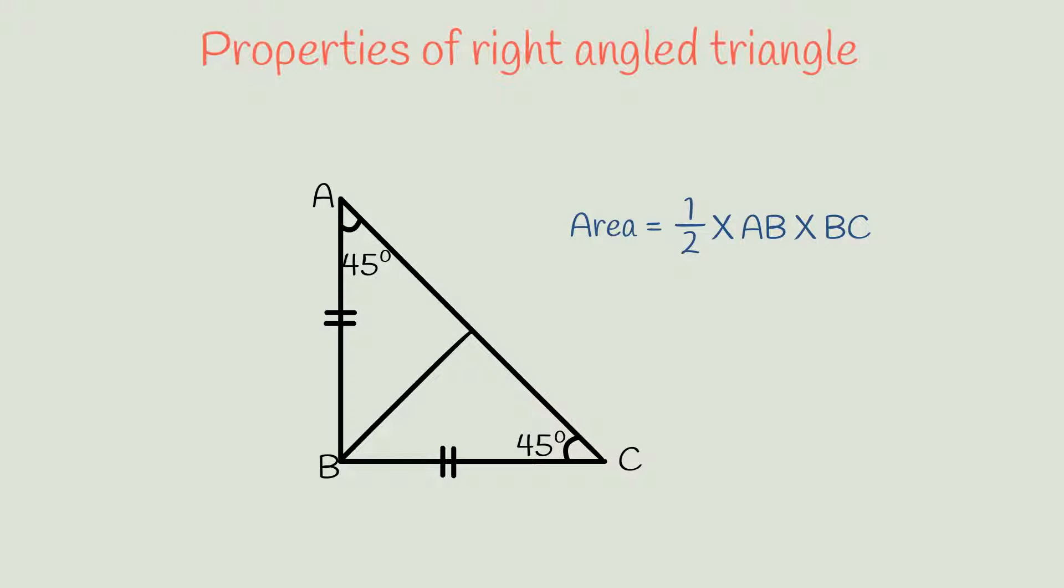The perpendicular drawn from the right angled vertex to the hypotenuse divides the triangle into two similar triangles which are similar to the given right angle triangle.